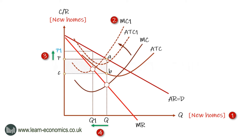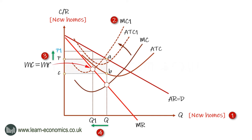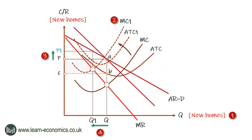The extent of the price increase depends upon the elasticity of demand for houses, reflected in the gradient of the average revenue curve. With a housing shortage, the price elasticity is likely to be inelastic, meaning that most or all of the cost increase is passed on in higher prices.